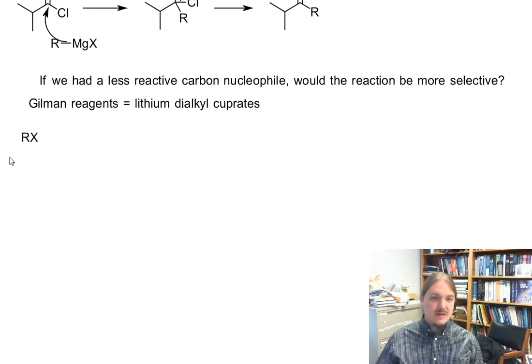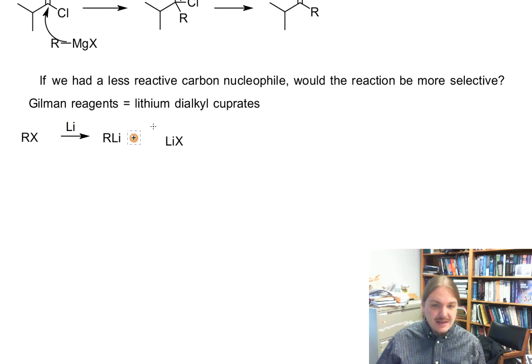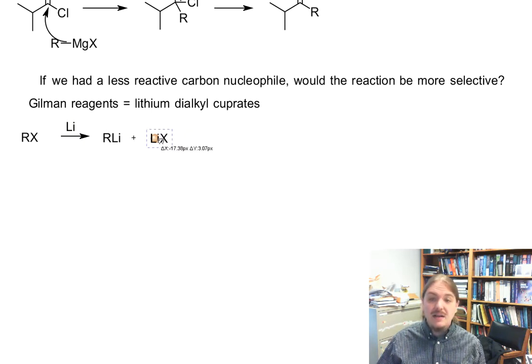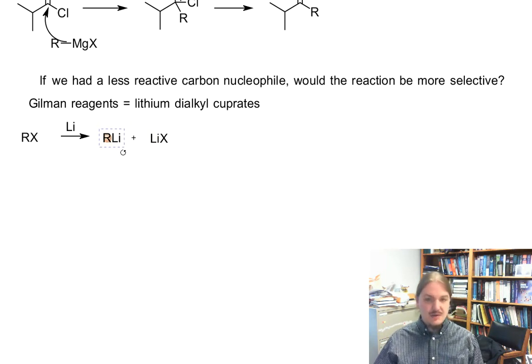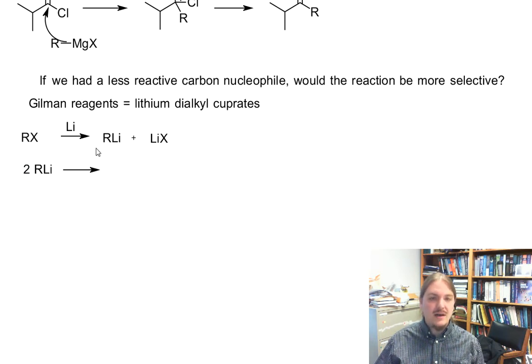If you have some organic halide that you react with lithium metal, you get a reaction very similar to the formation of a Grignard reagent in that you replace the halogen with a lithium. These lithium reagents behave a lot like Grignard reagents.